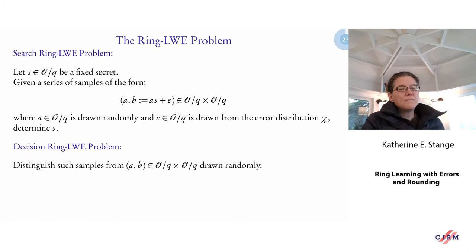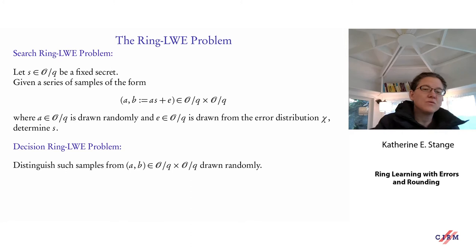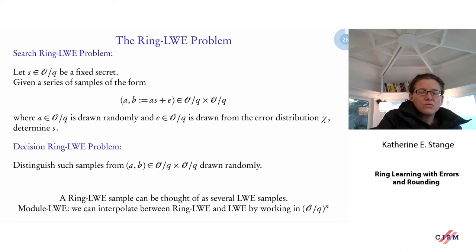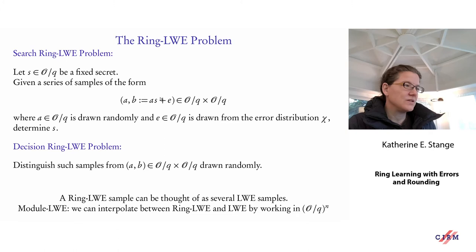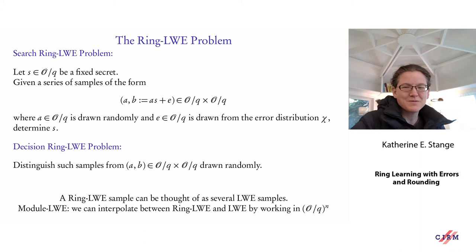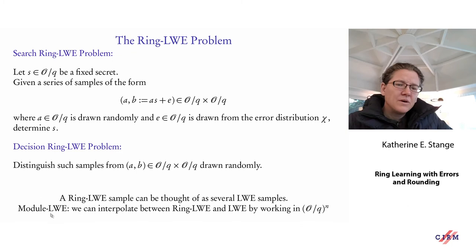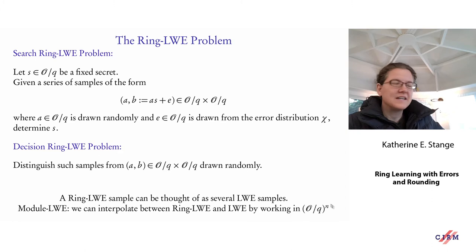You can make this a decisional problem: distinguish samples of this form from ones formed uniformly randomly in (O mod q) × (O mod q). One Ring LWE sample has n coordinates, so it's actually n standard LWE samples, but they're connected by number theory — they're not just randomly unrelated. There's also Module LWE, which interpolates between Ring LWE and LWE by taking O mod q for a smaller dimension but with several copies.